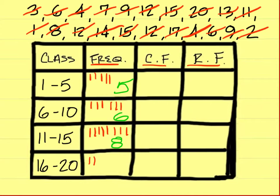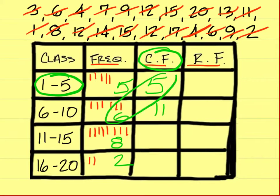So what's the cumulative frequency for the first class? Cumulative frequency on this first class here would be five. What's it for the next one? Eleven, because you add that five and this eleven. What's the next one? Nineteen, because you add the eleven and the eight.